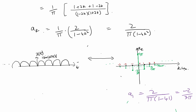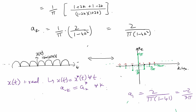Let's verify these aₖ's against properties studied in class. For a real-valued signal x(t), the condition is a₋ₖ = aₖ* for all k. Looking at our coefficients: a₋₁ = −2/(3π), which equals a₁* = (−2/(3π))* = −2/(3π), since the conjugate of a real number is itself. So this property is clearly satisfied, consistent with x(t) being real-valued.